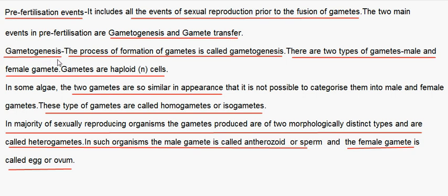Gametogenesis is the process of formation of gametes. There are two types of gametes: male gametes and female gametes. The gametes are haploid cells.